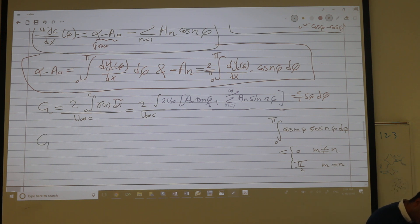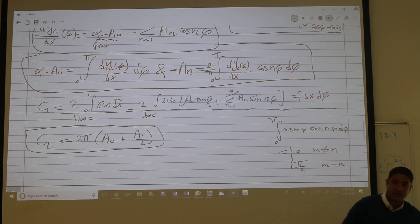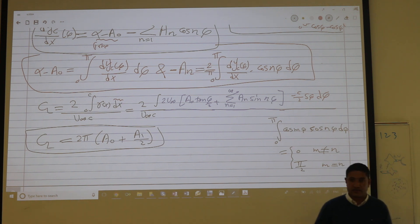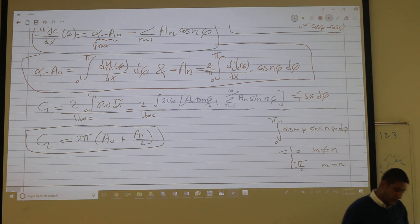So if you do that you'll find that Cl is 2 pi a nought plus a1 over 2. Interestingly, the lift coefficient depends only on the first two coefficients. The lift is only dependent on the first two coefficients. I don't care about the rest of the series. If you want the lift, just get me the first two coefficients.